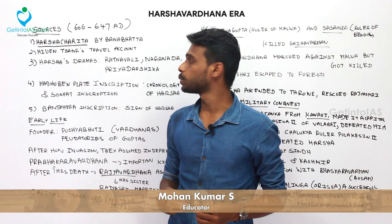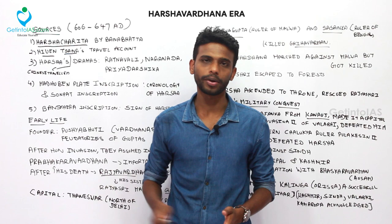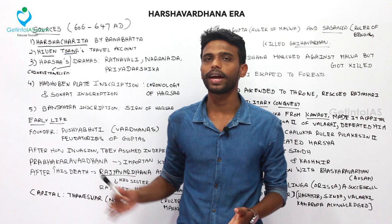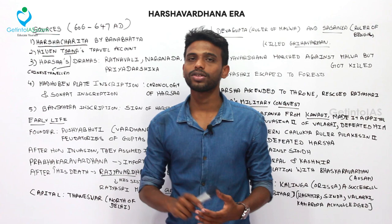The next important source is Xuanzang, a Chinese traveler who came to India during Harsha's period and explored many places. His accounts provided valid details for historians writing about the history of Harsha. Additionally, Harsha himself wrote three dramas: Ratnavali, Nagananda, and Priyadarshika, which are also important primary sources.